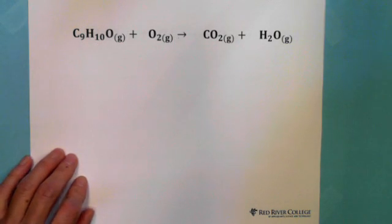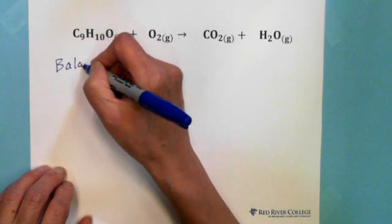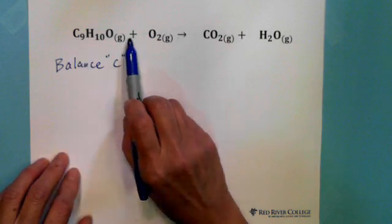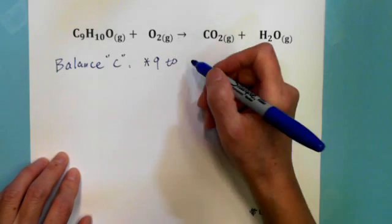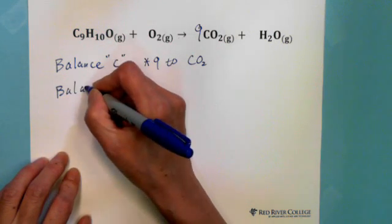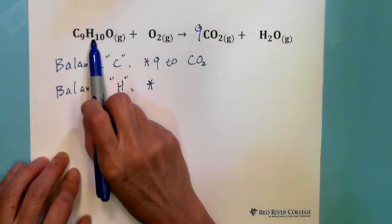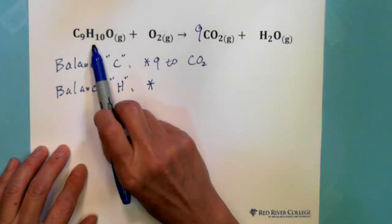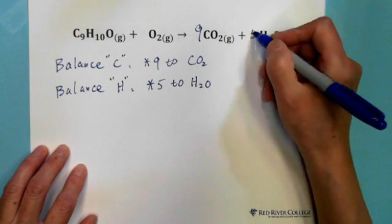Second example: balance carbon first. There are nine carbons before the reaction and one carbon in CO2, so multiply CO2 by nine. Then balance hydrogen: there are ten hydrogens before the reaction and two in H2O, so multiply H2O by five.